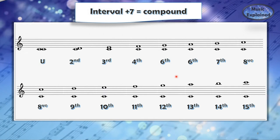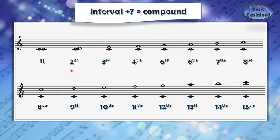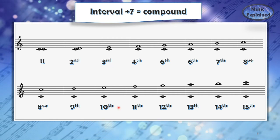On this slide, we have all the intervals without any accidentals just to be easier for you to understand. So the second plus seven equals a ninth, the third plus seven equals a tenth, the fourth plus seven equals an eleventh.